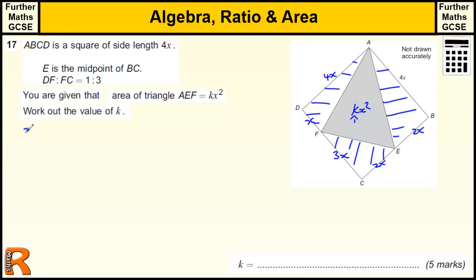So the area of the square is going to be 4x all squared, which is 16x squared.